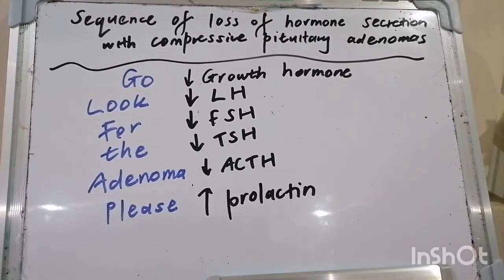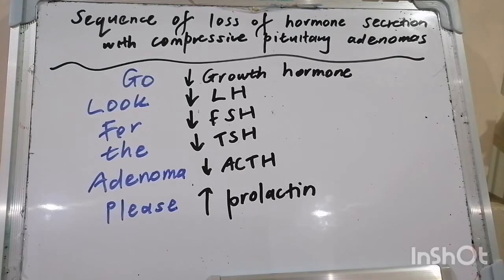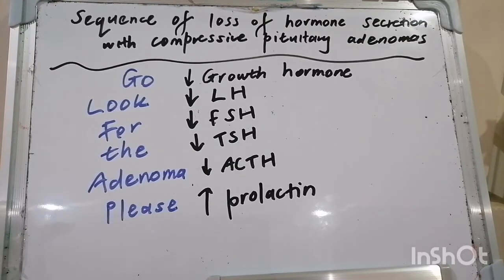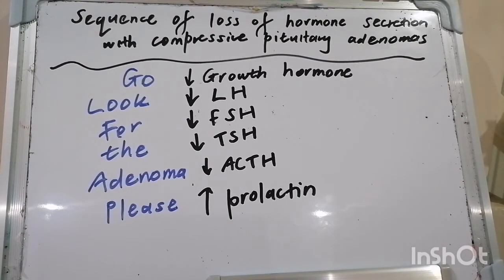For a prolactinoma, give dopamine agonists: cabergoline at 0.25 to 1 mg twice weekly, or bromocriptine 1.25 up to 7.5 mg twice daily. Consider transsphenoidal surgery if resistant to medical therapy or if visual fields are compromised. Prolactinoma is the one pituitary tumor amenable to complete medical treatment. Indications for treatment include infertility, galactorrhea, hypogonadism-related osteoporosis, mass effect, and macroadenoma.